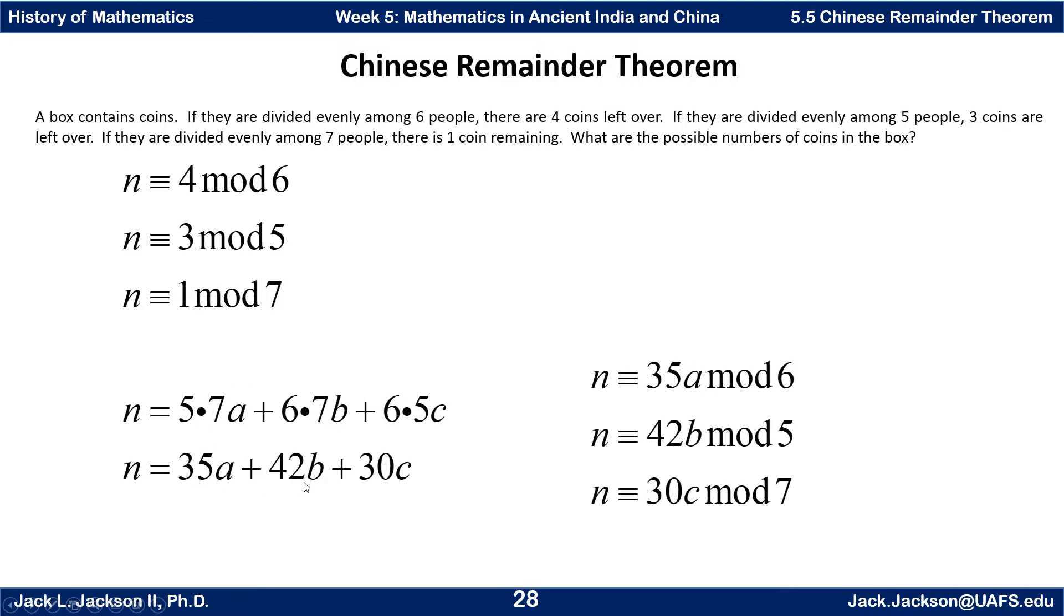So just go ahead and do the multiplication. That's 35A plus 42B plus 30C. And we need to solve for A, B, and C.